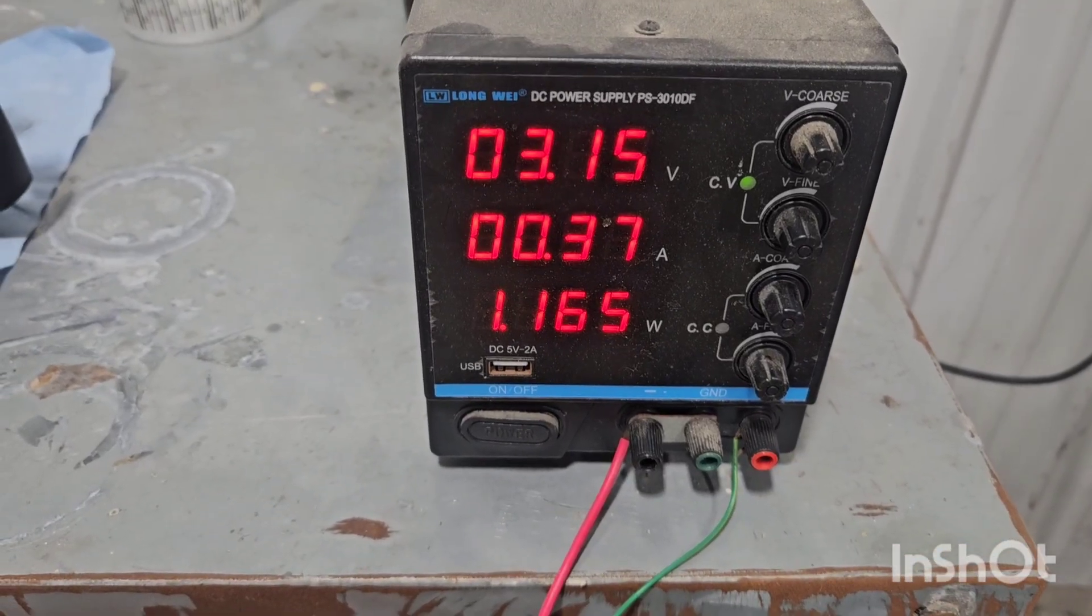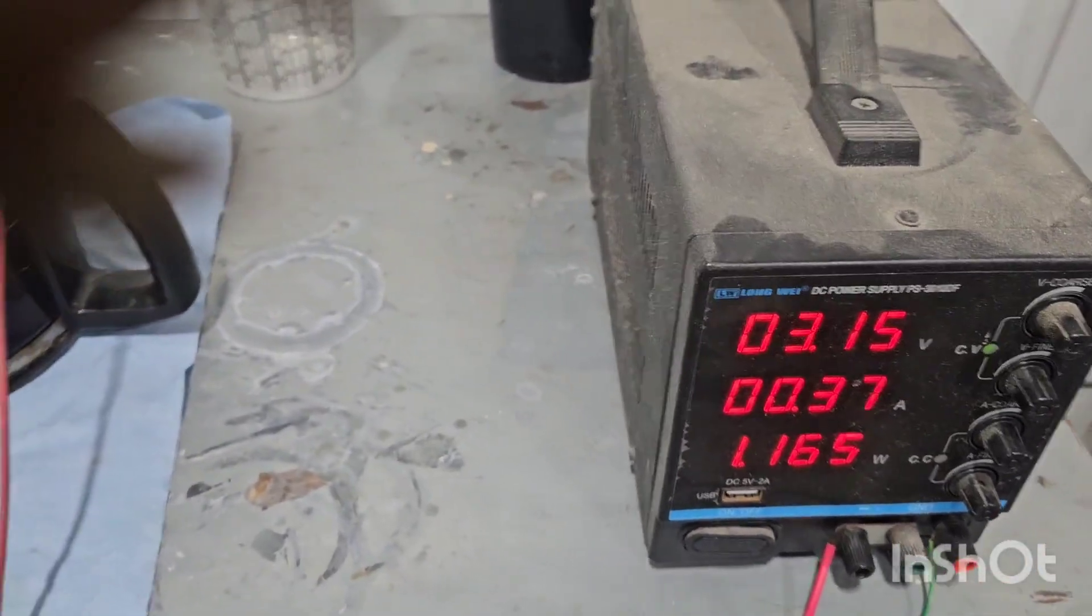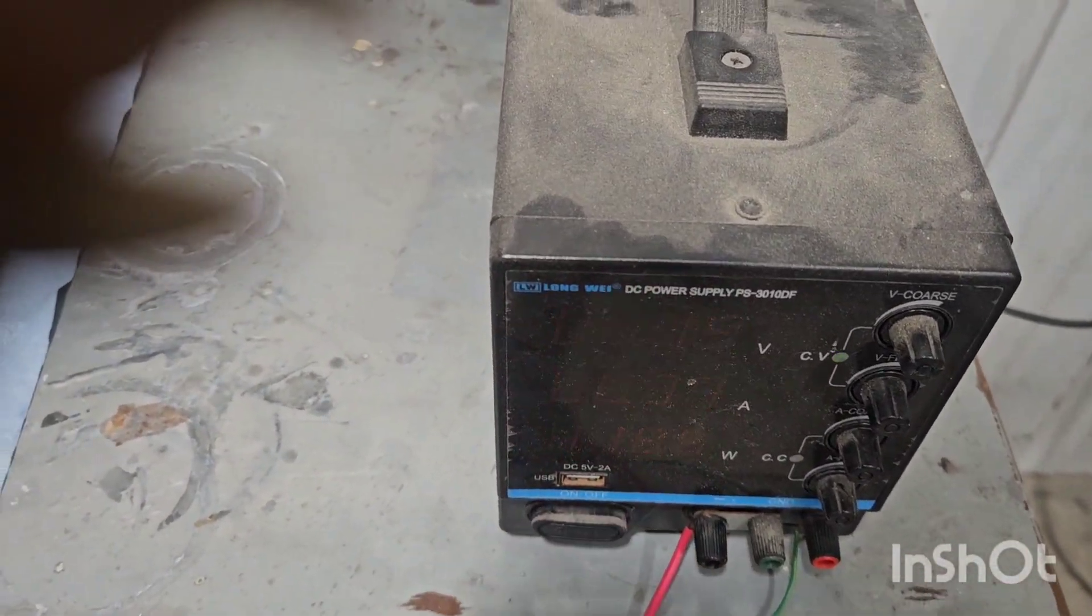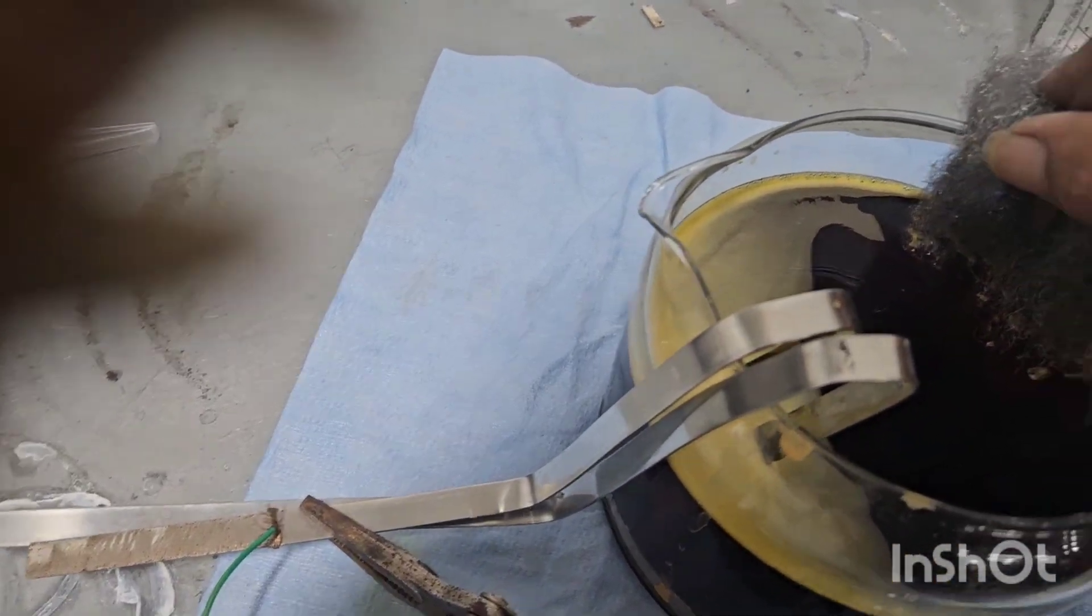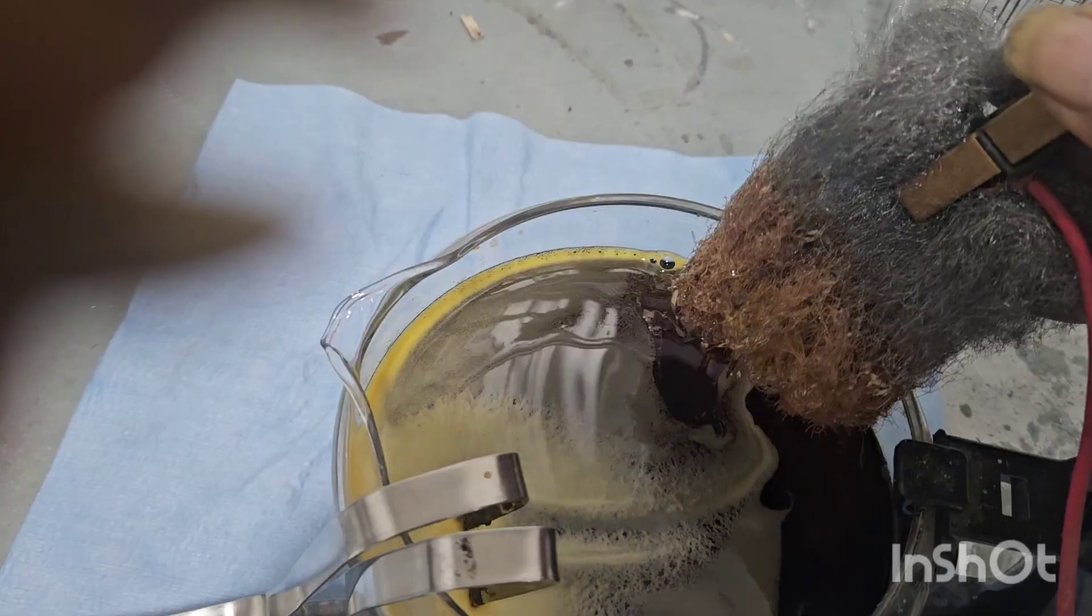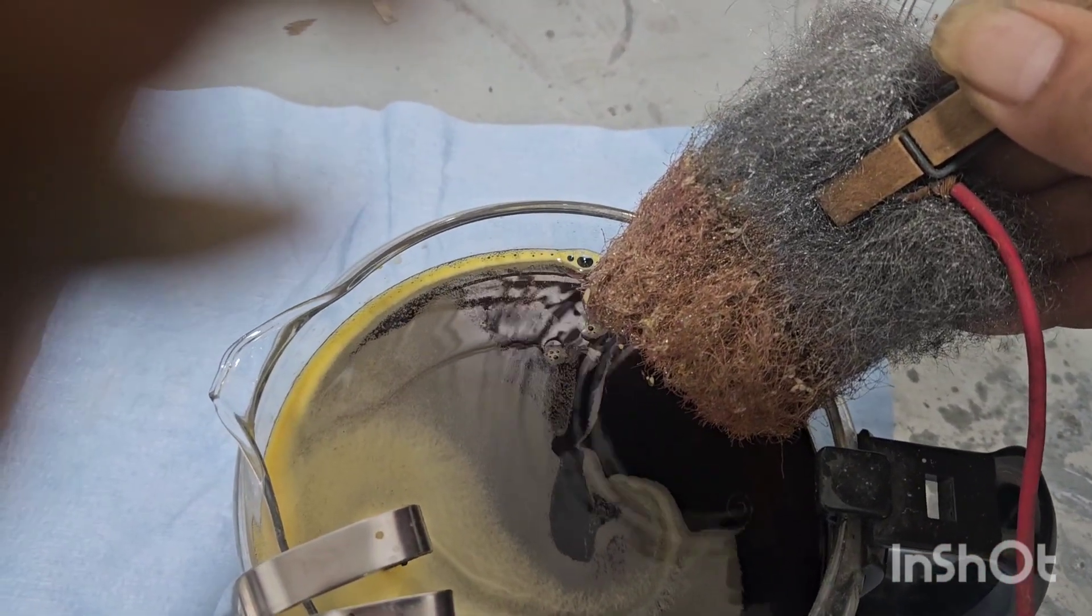All right 24 hours later, there's my voltage, there's my amps. I'm gonna turn this off. And let's look at the progress. You can see the gold is plating out nicely.